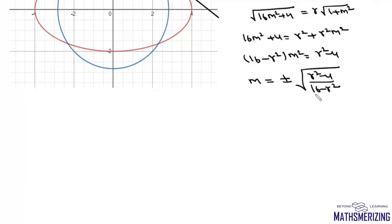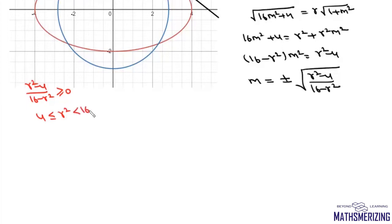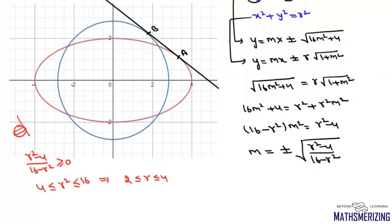For the slope to be real, we need (r² − 4)/(16 − r²) ≥ 0, which gives 4 < r² < 16, i.e., 2 < r < 4. We can also include r = 4 because in that case the circle and ellipse touch at the vertices of the major axis with a vertical tangent (m → ∞). So r lies between 2 and 4.